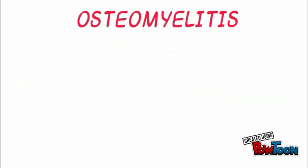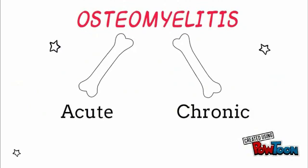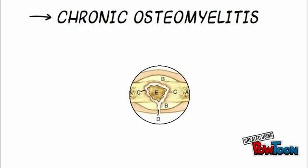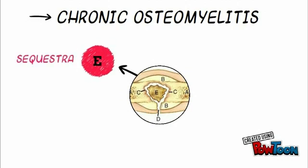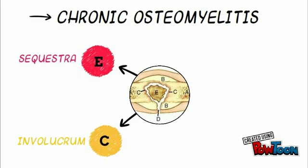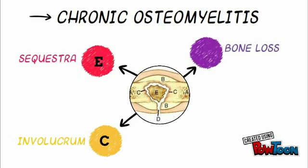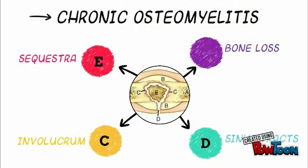Osteomyelitis can be categorised as either acute or chronic. Chronic osteomyelitis is characterised by the presence of sequestra. A sequestrum is a piece of separated dead bone that results from the disruption in periosteal blood supply and subsequent bone necrosis. The layer of new bone that forms in areas of periosteal damage is known as an involucrum. Other hallmarks of chronic osteomyelitis include local bone loss and extension of infection through cortical bone, known as sinus tracts.